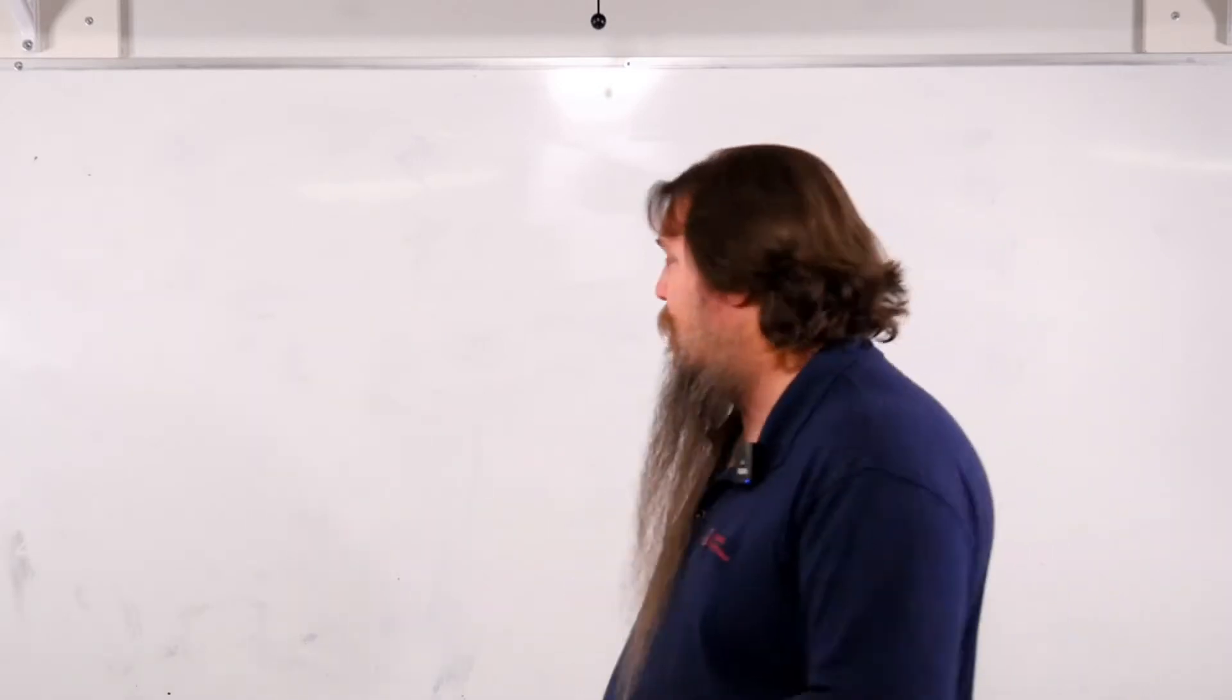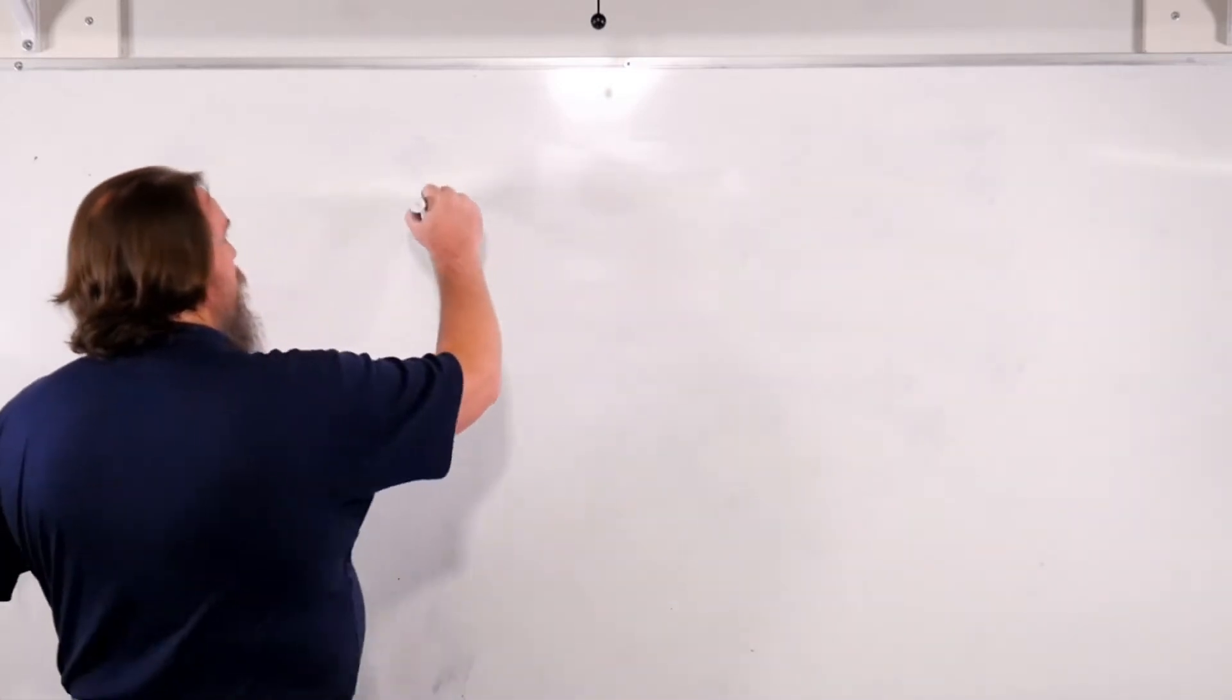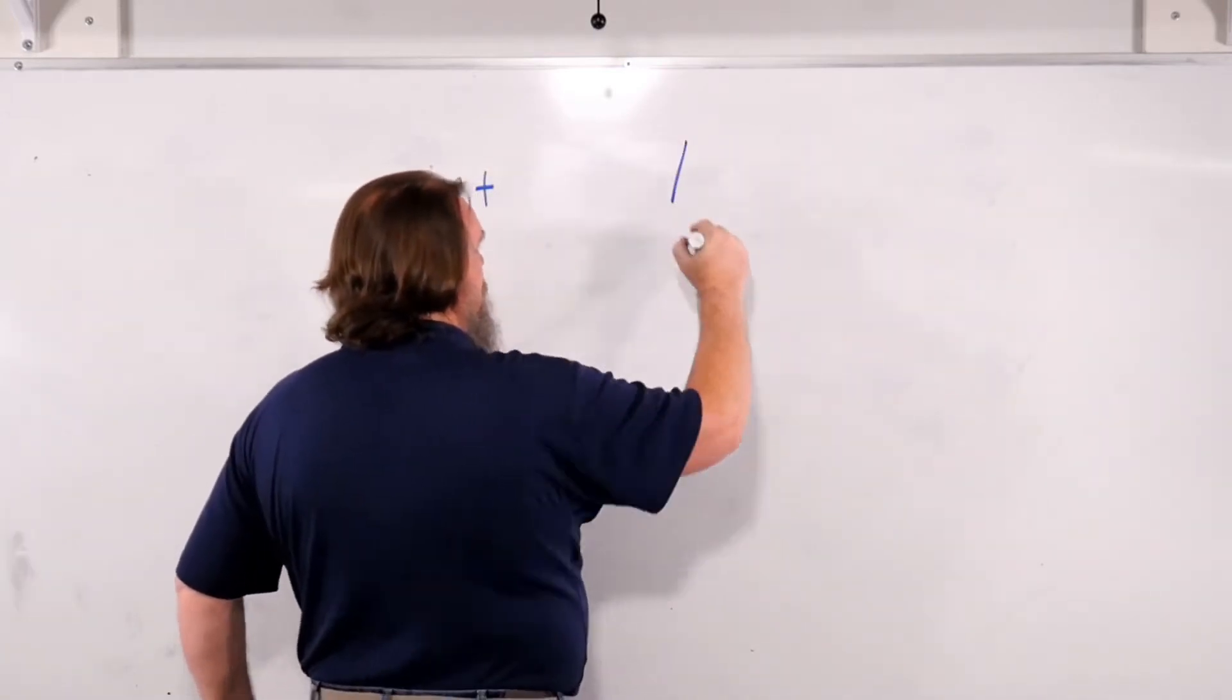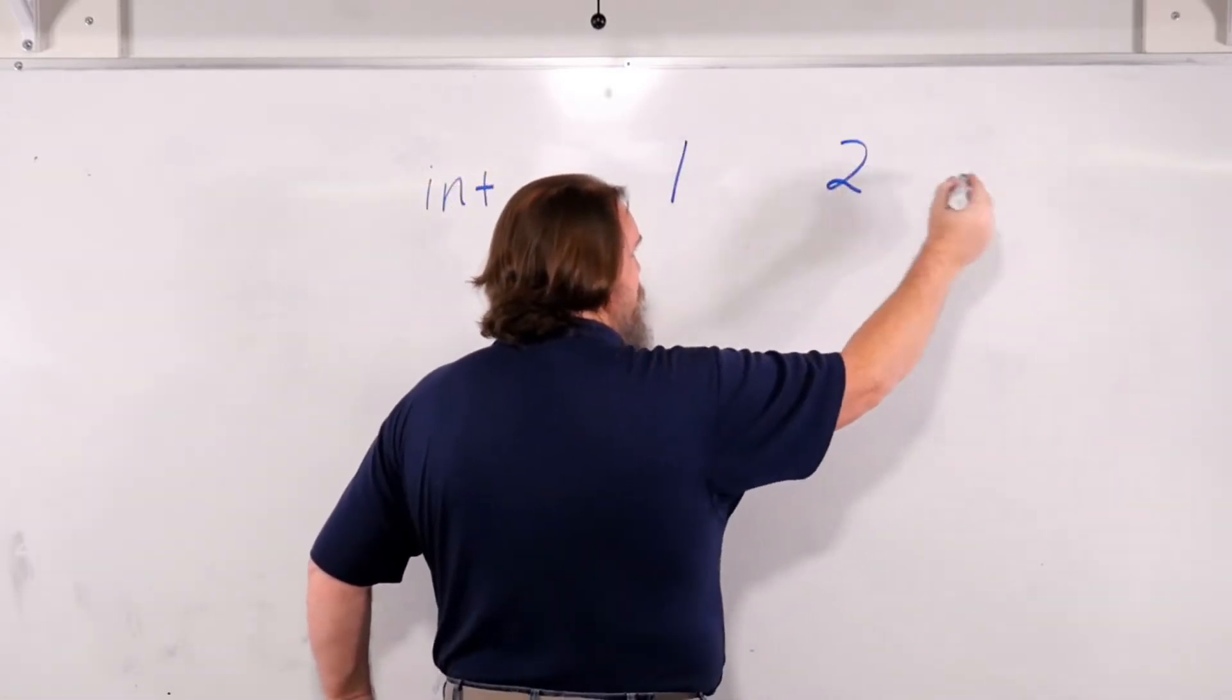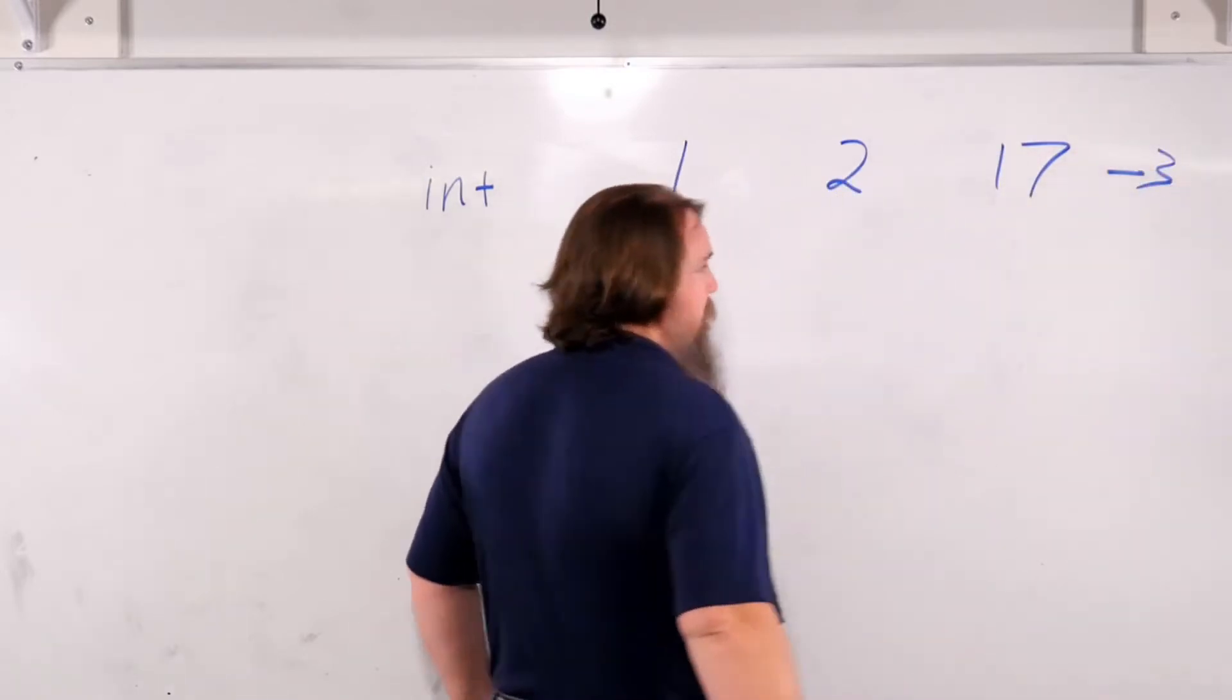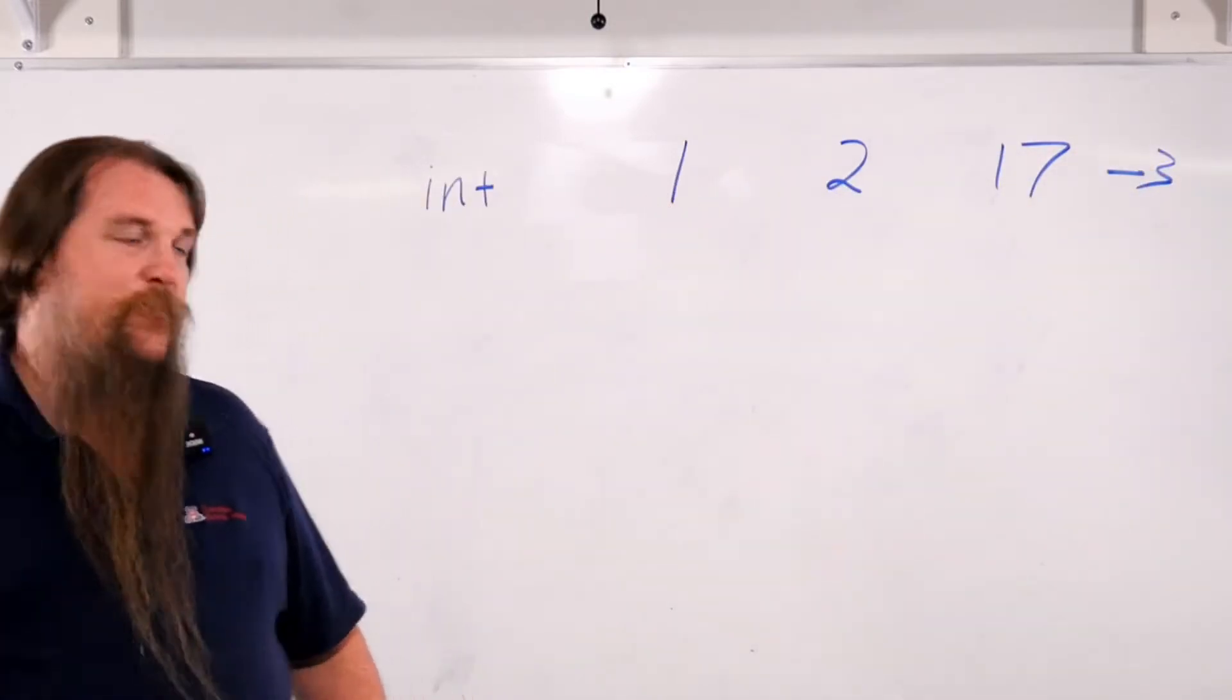First couple of types are ones that you've already seen. We have integers. So for integers, they're just things like 1, 2, 17, negative 3. Nothing particularly remarkable about that.